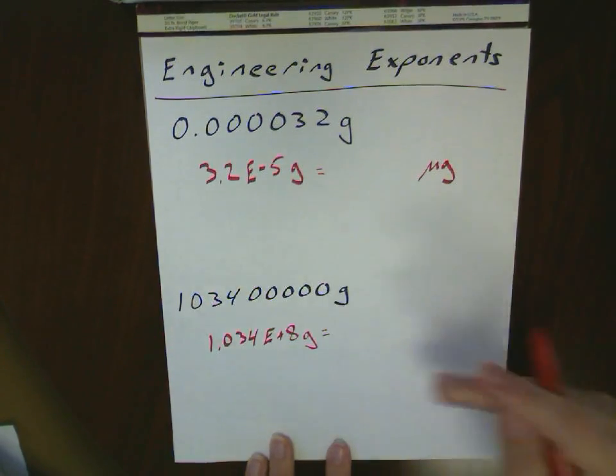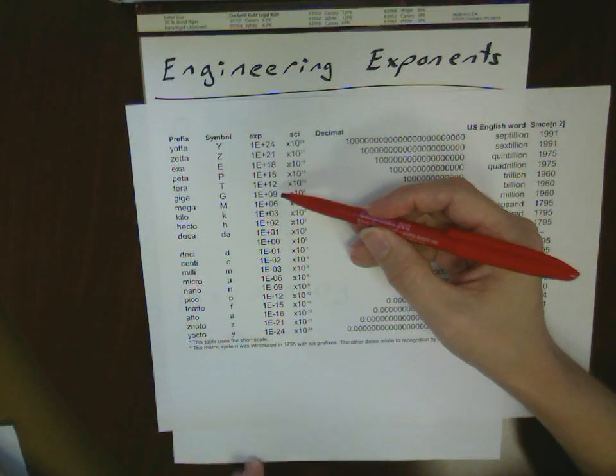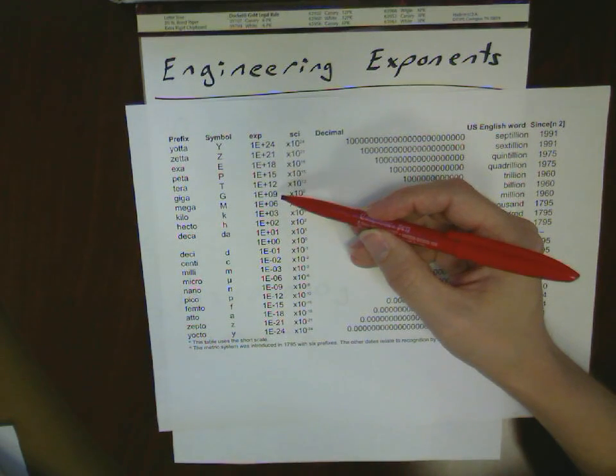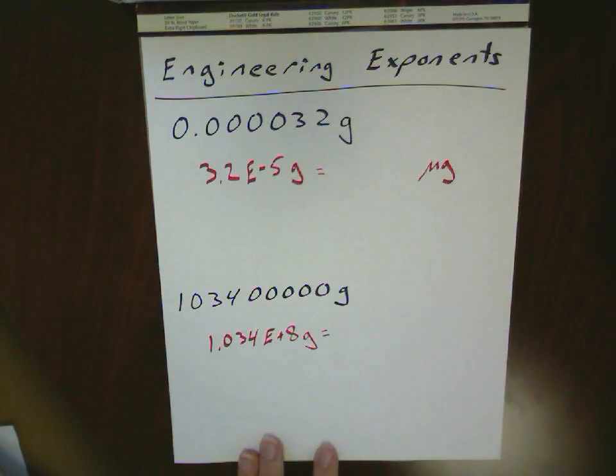Similarly, on our large one here, we can take a look at it and say, OK, plus 8 is not one of these, but plus 9 is. Plus 9 is probably the closest there. So that gives us something in gigagrams.